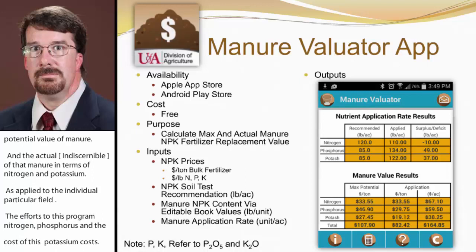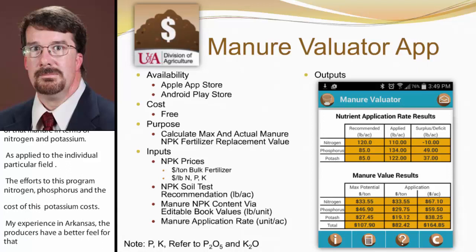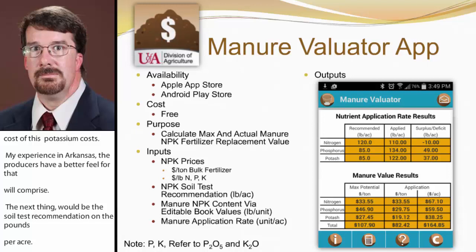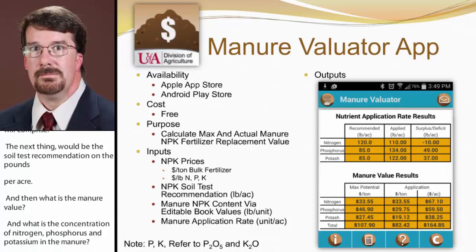My experience is that, at least in Arkansas, producers have a better feel for what the bulk fertilizer price is, and then they have to scramble to figure out what the per-pound price is. The next input is soil test recommendations in terms of pounds per acre. Then the app asks for manure nutrient concentration — the nitrogen, phosphorus, and potassium content in the manure. The app supplies historical book values based on samples sent to the U of A lab, and the user has the ability to edit those to match their own manure analysis.